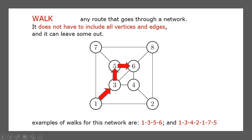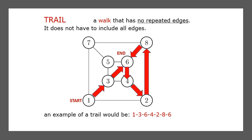A walk is just where you can go anywhere you want in the network. You don't have to visit all of the vertices and places. Here's a simple walk — I've just gone from one to three to five to six, and any journey you do in a network can always be classified as a walk. Now, a trail.